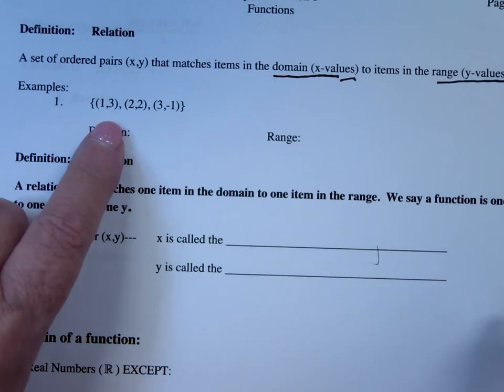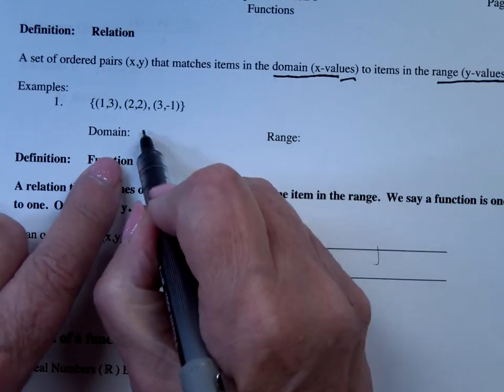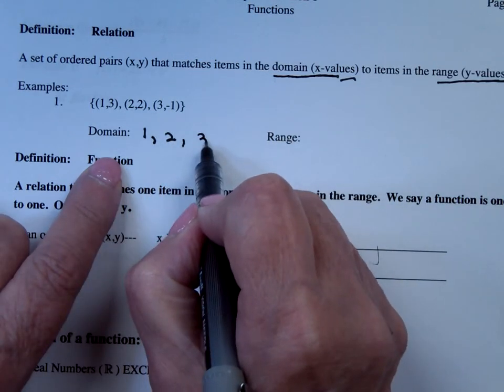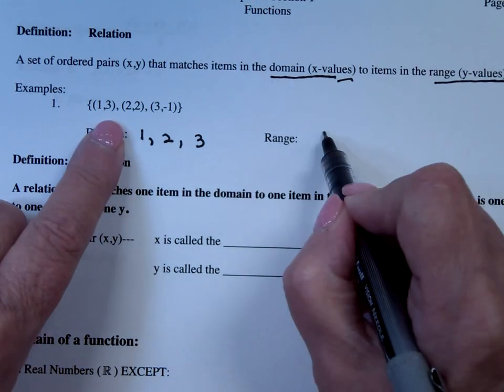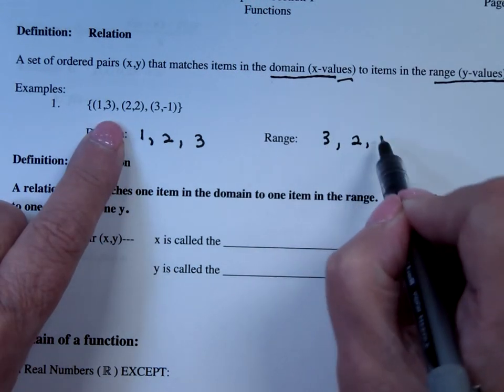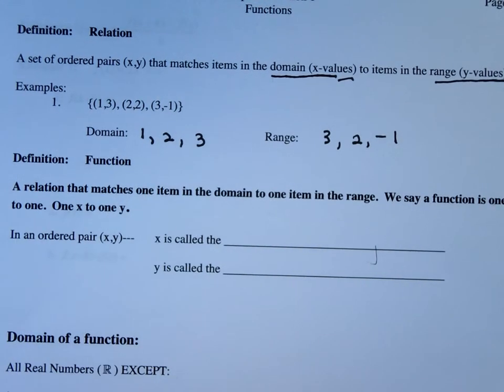So if I look at just a set of ordered pairs, the domain would be the x values. And the range would be the y values. And if I had repeats, I don't necessarily need to write that down.